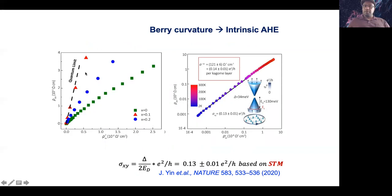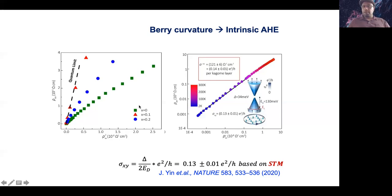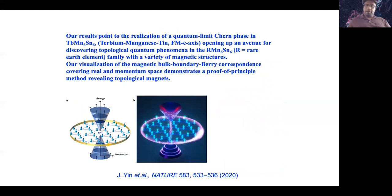This is also consistent with anomalous Hall transport: fitting the anomalous Hall transport also gives a 34 millivolt gap and 130 millivolt Fermi level shift — remarkable agreement between STM and transport. The advantage of spectroscopy is that unlike transport, where you just see the quantum anomalous Hall effect without learning the microscopics, here we know how to further engineer the system — how to dope and how much — to bring it to the quantum limit and eventually room temperature. This is a baseline system we hope to achieve room-temperature topological magnet operation from in the next few years.